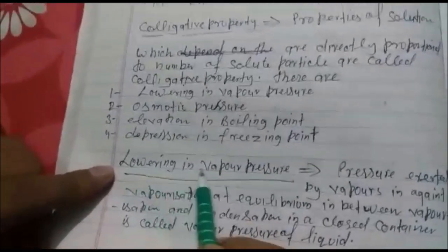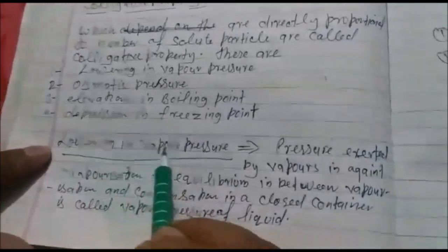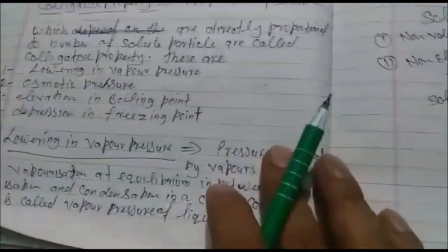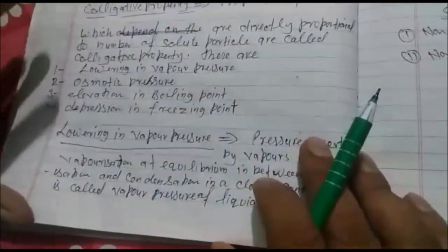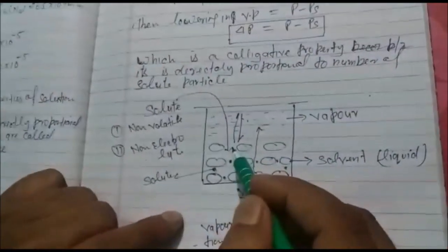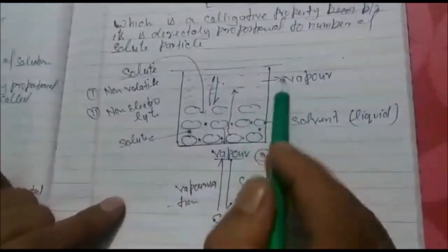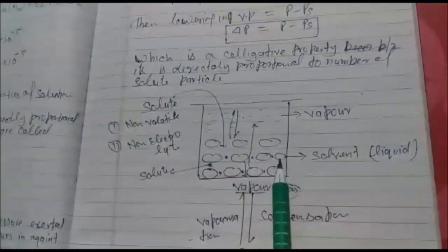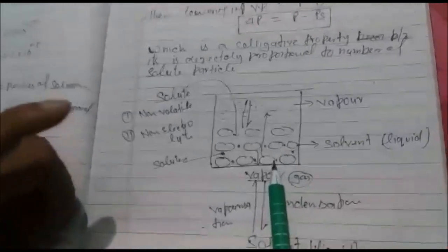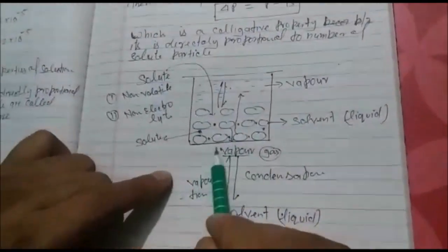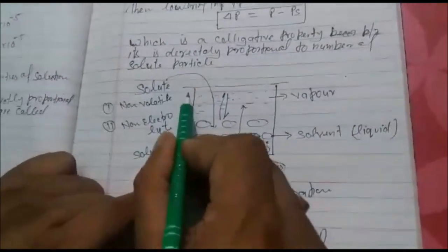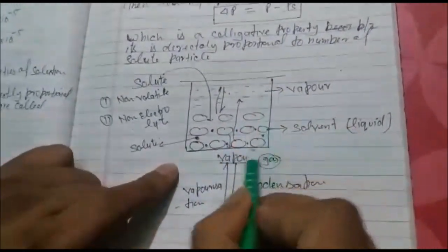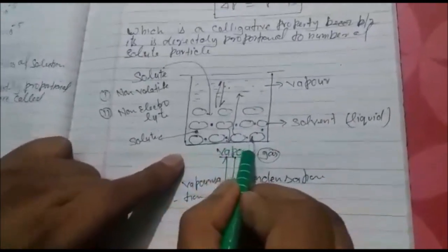This is a very important topic, lowering in vapor pressure. Before that we have to understand what is lowering in vapor pressure. This diagram is very important, you can say backbone of this chapter. So see properly. In a container, we have taken solvent molecules, these are the solvent molecules,